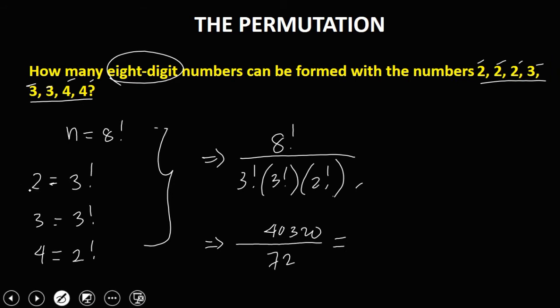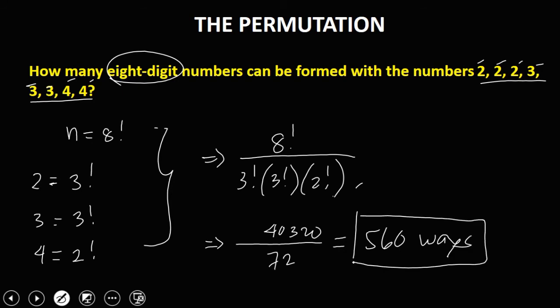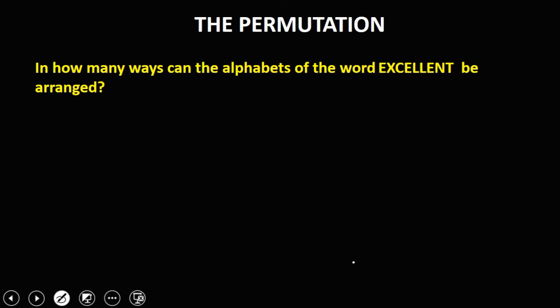Therefore, there are 560 ways. For this next problem, in how many ways can the alphabets of the word EXCELLENCE be arranged? From the word EXCELLENCE, there are 9 letters, so n is equal to 9 factorial.